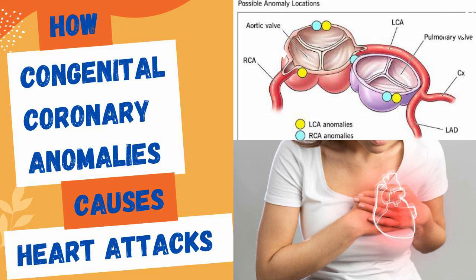Impaired blood supply: the structural abnormalities in the coronary arteries can affect their ability to supply oxygenated blood to the heart muscle adequately. In some cases, the abnormal course of the coronary artery may result in compression or kinking, leading to reduced blood flow or even complete blockage of the artery. This diminished blood supply can result in ischemia, a condition where the heart muscle doesn't receive sufficient oxygen and nutrients, ultimately leading to myocardial infarction.